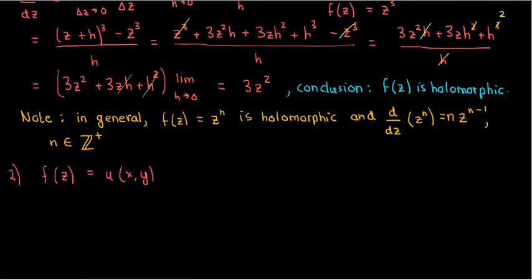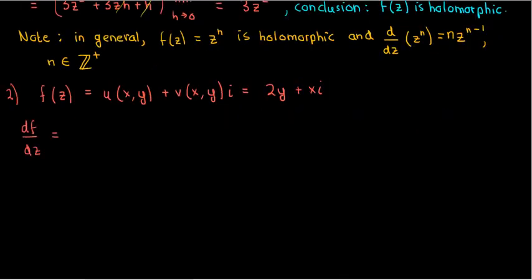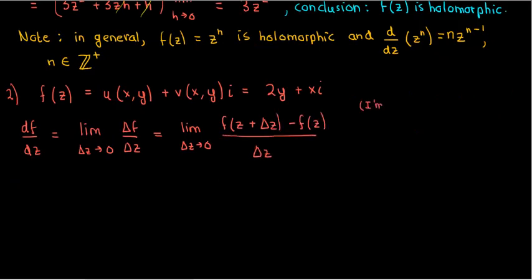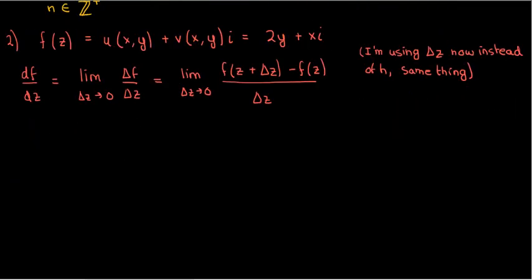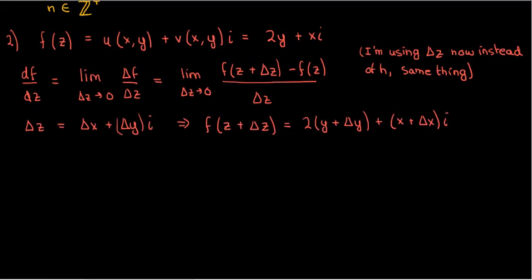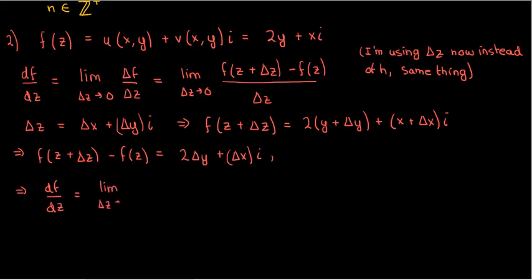The other example we'll be doing is f of z, which is u plus vi, is 2y plus xi. Again, let's use the definition of the derivative. The only difference is that now we have a function in terms of x and y instead of just z. So to make things easier, we'll use delta z instead of the h we used earlier. Because z itself is just x plus yi, it follows that delta z is just delta x plus delta y times i. So f of z plus delta z is 2 times y plus delta y plus x plus delta x times i. Subtracting f of z from this expression gives us 2 delta y plus delta x times i. And if we plug this into the definition of the derivative, we'll get the limit as delta z approaches 0 of 2 delta y plus delta x i over delta x plus delta y times i.